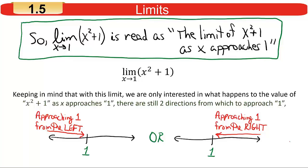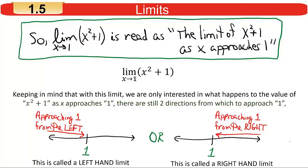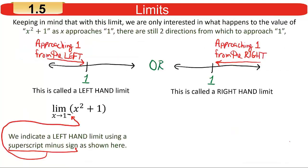Even within the issue of what happens to the expression as x gets close to 1, we have to worry about directionality. If we're coming from the left toward 1, we call that a left-hand limit. If we're coming from the right toward 1, we call that a right-hand limit. Notationally, if we want to indicate a left-hand limit, we go to the number the arrow points to — in this case 1 — and put a superscript minus sign.